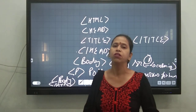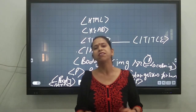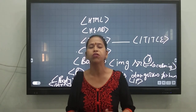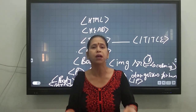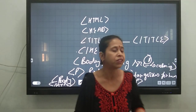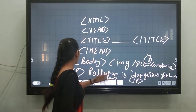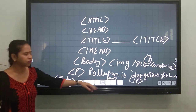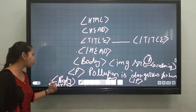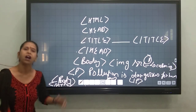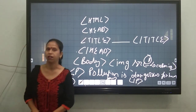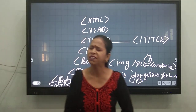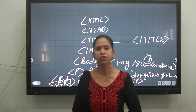You are inserting your image. If you want to write some feature of the image, you can write. If you want to write something about the image, you can write. After that, you will close the paragraph tag, close the body, and close the STML. This is a very simple program.